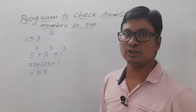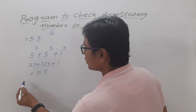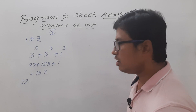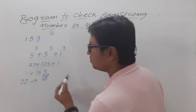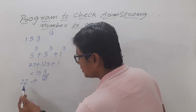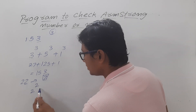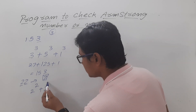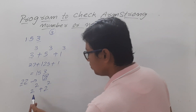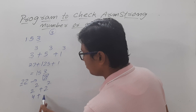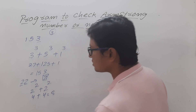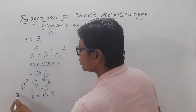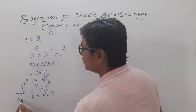Since the sum of individual digits raised to the power of the number of digits equals the given number, we say it is an Armstrong number. Let me discuss one more example: take 22. The number of digits is 2, so: 2² + 2² = 4 + 4 = 8. Since 22 ≠ 8, 22 is not an Armstrong number.